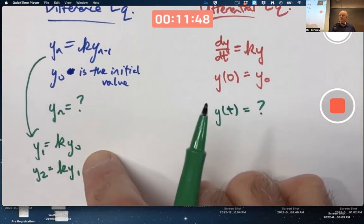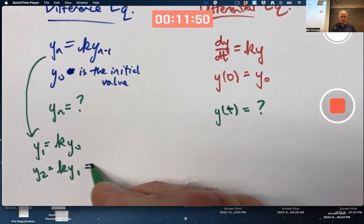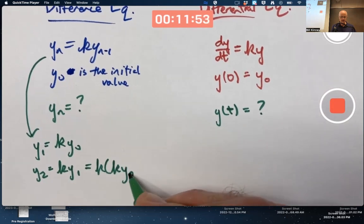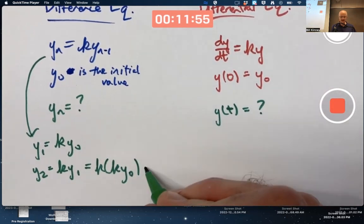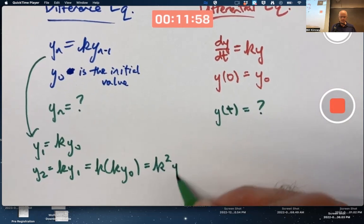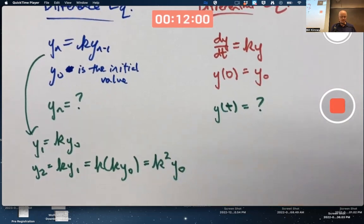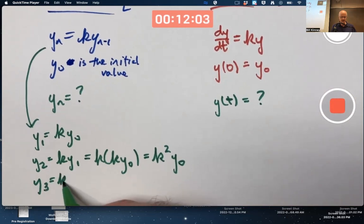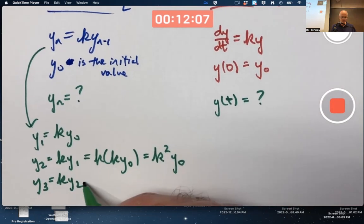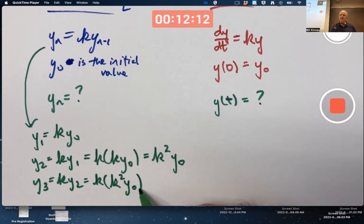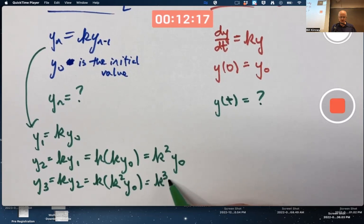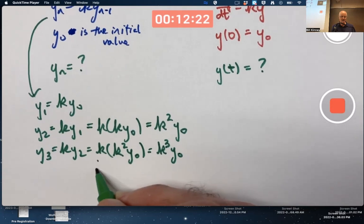You want to get this ultimately in terms of the initial condition. Replace that Y one with K times Y zero, and then simplify. K times K is K squared. Y three is going to be K times Y two. But what's Y two? Y two is K squared times Y naught, giving you K cubed times Y naught. That pattern continues.